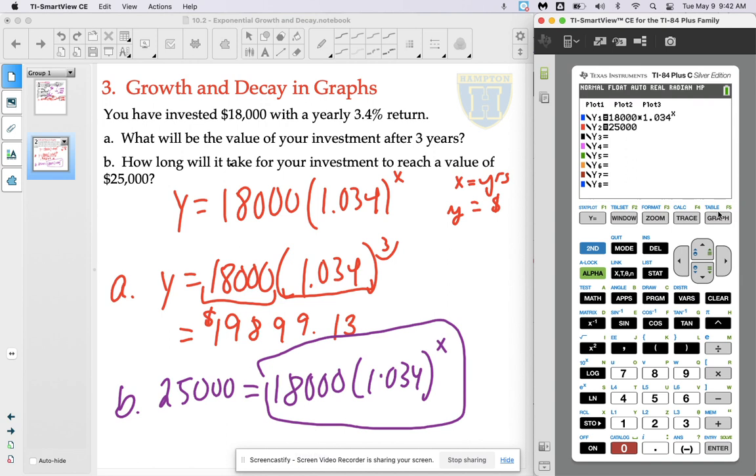And the hope is that we can identify some intersection point between the horizontal line at 25,000 and the exponential function that we've already graphed. And it looks like our intersection point is over here somewhere right before that 10.